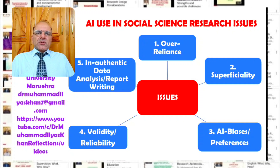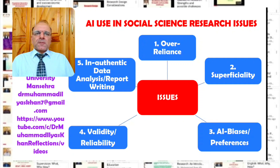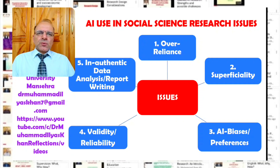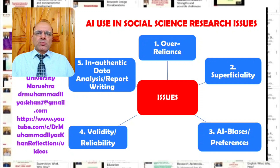However, the use of AI is not without problems. The increasing use of AI in social science research, especially by junior or student researchers, can have several issues. The first major issue is over-reliance on AI — many student researchers find it more convenient to directly rely on AI rather than digging deeper into the issue they are exploring. This can hamper the research process and lead to superficial understanding of the topic.